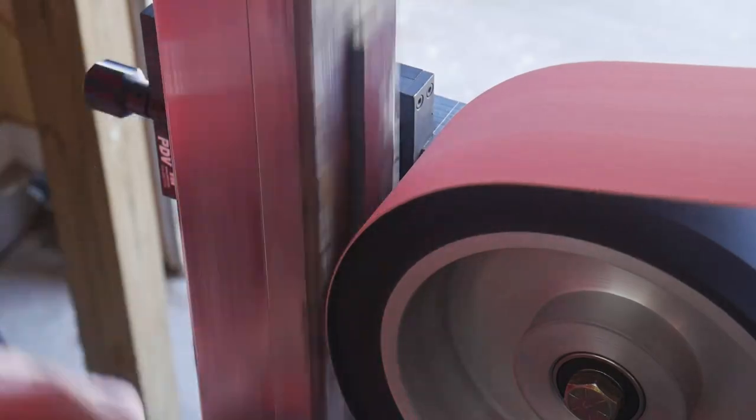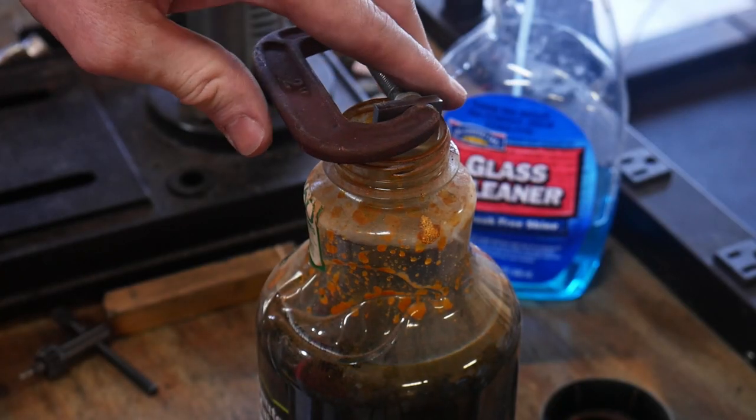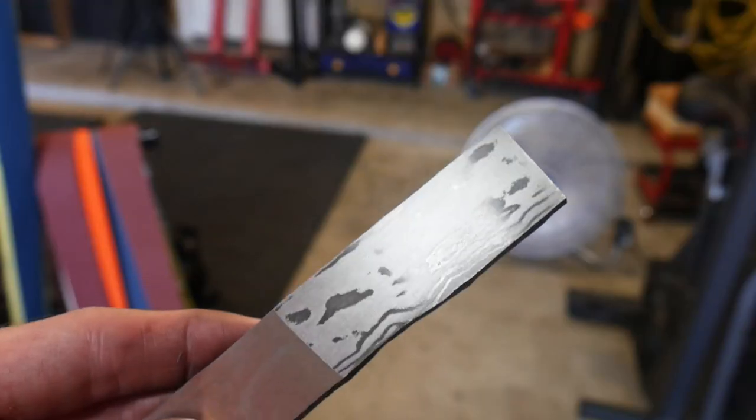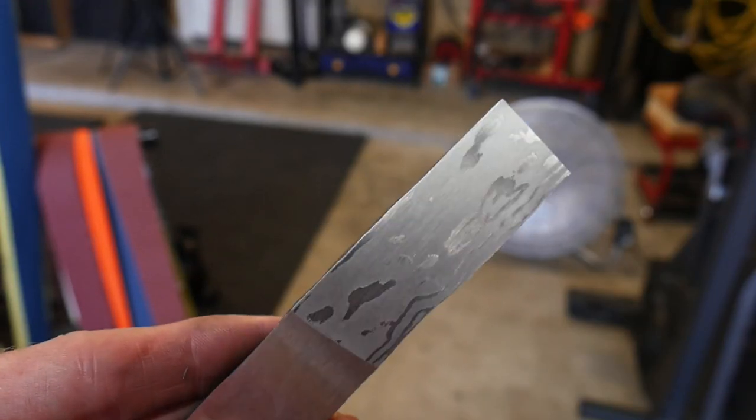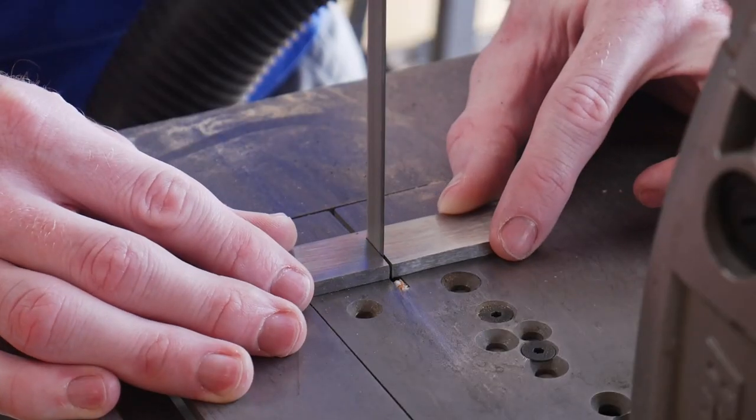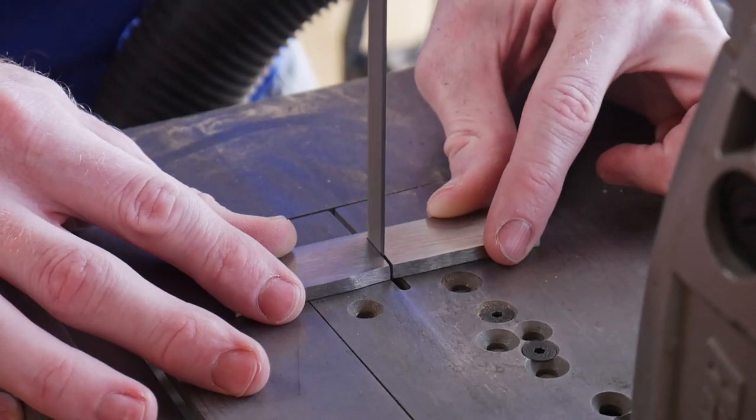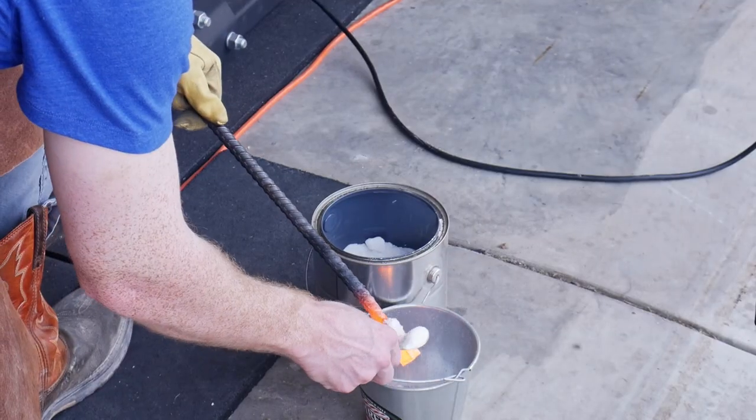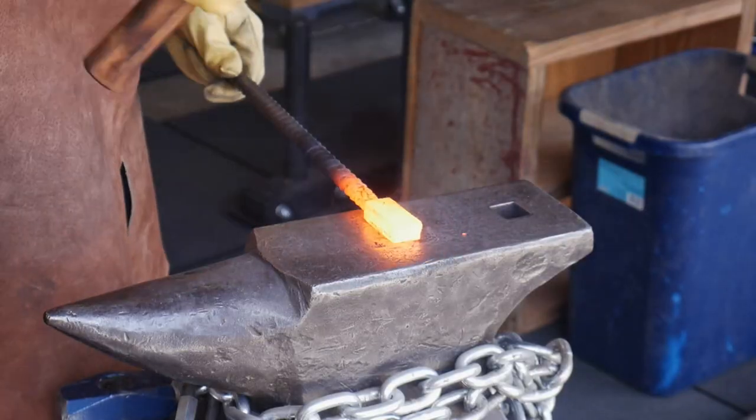I did the same operation a third time, getting the piece nice and clean. Just for fun I wanted to etch it and see what 33 layers looks like. We're going to cut this thing up into three more pieces, stack it, weld it, and start drawing out the billet for the third and final time. This will bring my layer count up to 99 layers.